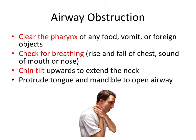For airway obstruction, hands around the neck is the universal choking sign. If a patient aspirates something — a dental instrument like an endofile or an extracted tooth — first clear the pharynx of any food, vomit, or foreign objects. Check for breathing by looking for rise and fall of the chest and listening at the mouth or nose. Perform a chin tilt — tilt the chin upward to extend the neck, and protrude the tongue and mandible — to open the airway.